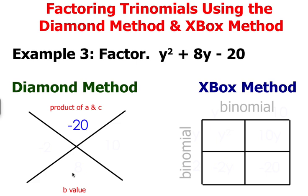At the bottom of the x you're going to write your b value which is 8. Now you need to think of two factors that have a product of negative 20 but have a sum of 8.